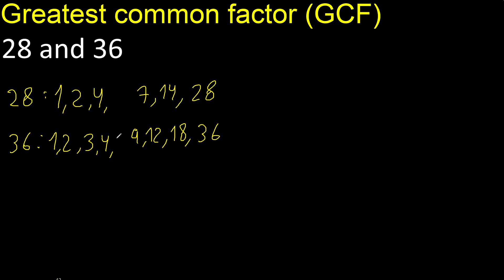Cannot be divided by 5. 6 — divided by 6 is 6. 6 is here.